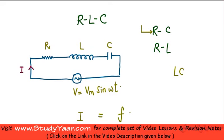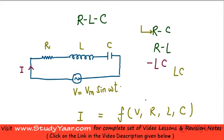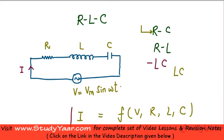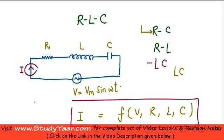You can also analyze an LC circuit, which is essentially a RLC circuit with R equal to zero. So if you find the current in terms of voltage, R, L, and C, you can analyze RC, RL, and LC circuits as special cases: for RC put L equal to zero, for RL put C equal to zero, and for LC put R equal to zero.